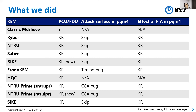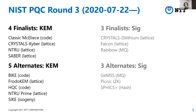NIST started standardization of post-quantum cryptography from 2016, and we are now in round three. There are four finalists for KEM: Classic McEliece, Kyber, NTRU, and Saber, and five alternate candidates: BIKE, FrodoKEM, HQC, NTRU Prime, and SIKE. At the end of this year or the beginning of the next, NIST will decide the winner of the KEM scheme and signature scheme.